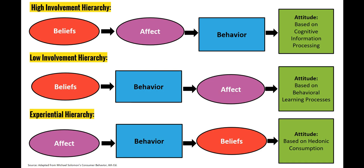Rational decision-making is often called the high-involvement hierarchy. Consumers have a set of core beliefs around a high-ticket or high-involvement purchase, such as higher education, a car, or a dishwasher. We believe, for instance, that we want good value, that green vehicles are better for the planet and more economical to own. That influences our affect — or how we feel about a particular product. Those beliefs make us feel positive about a green vehicle like a Toyota Prius, which causes the behavior of purchasing it. The attitude that results is based on cognitive information processing — we think through the process.